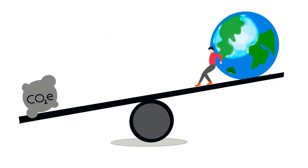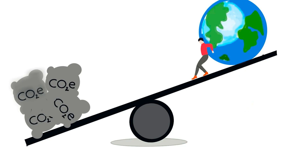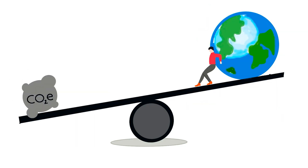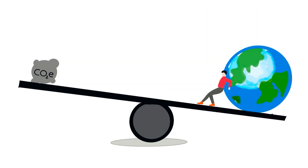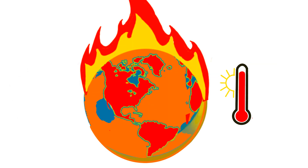If too many greenhouse gases accumulate, too much heat gets trapped and the Earth becomes too warm. This delicate balance is crucial for maintaining the perfect temperature for life on Earth.